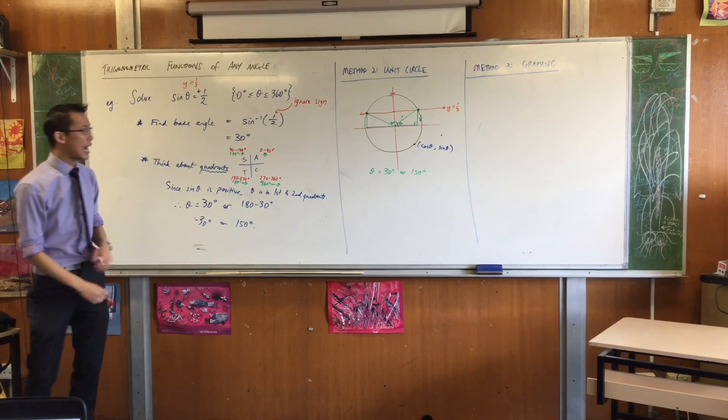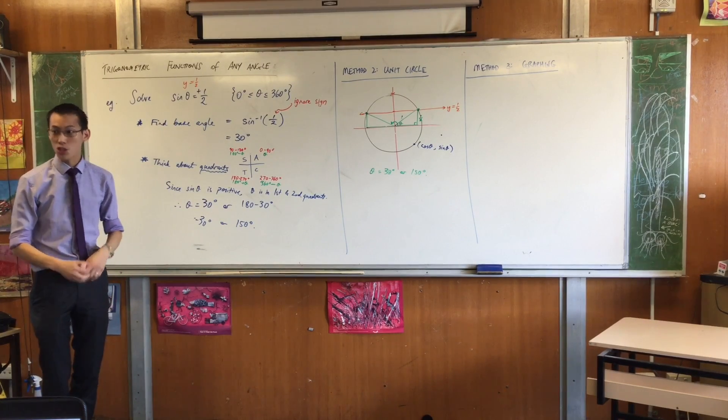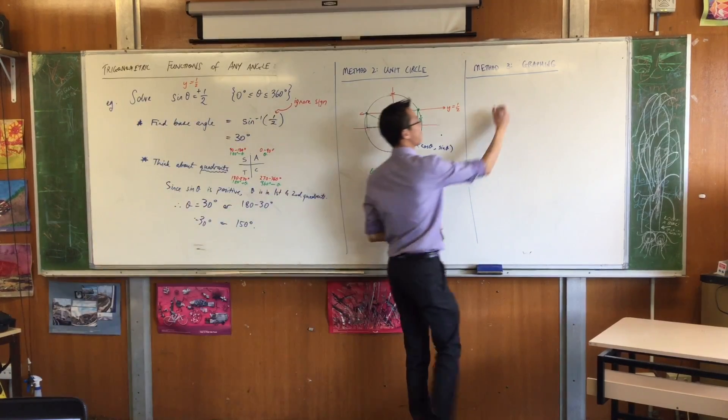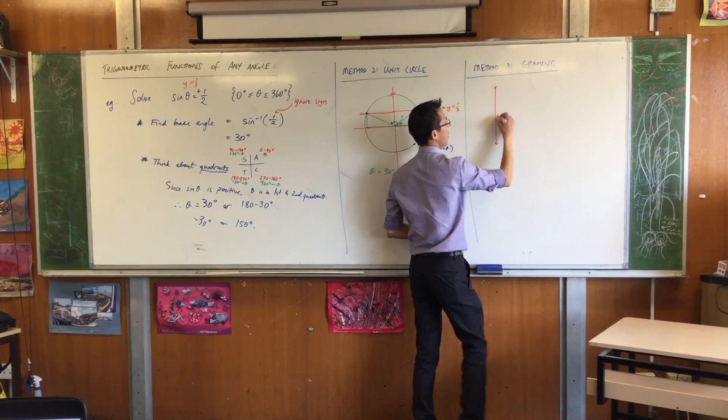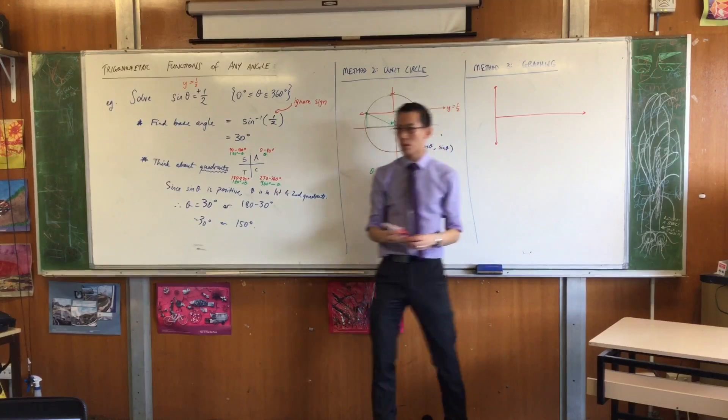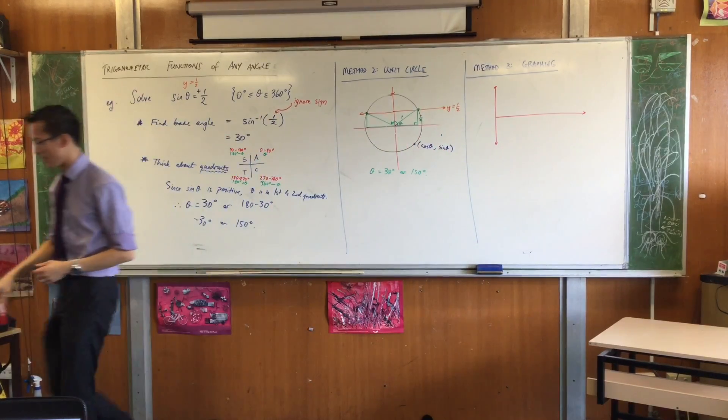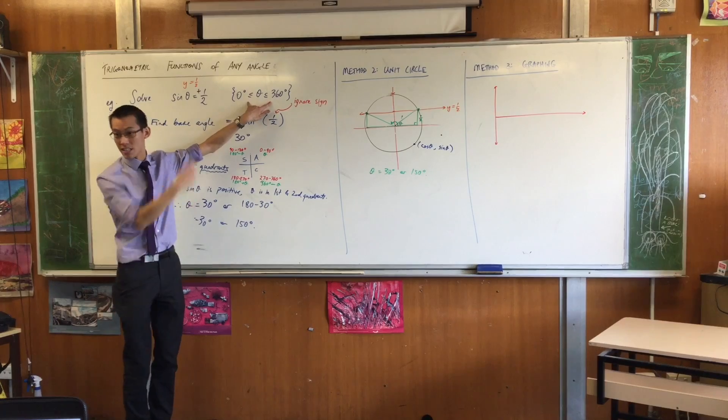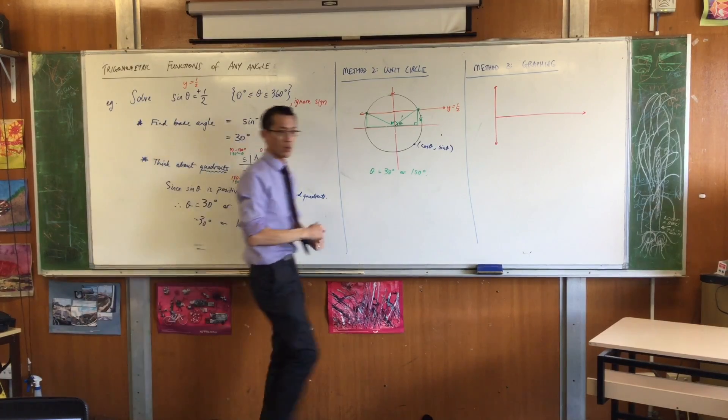So, at some point last year, you would have been introduced to what the sine graph looks like, and I want to show it to you again. I'm not going to draw the whole sine graph, which waves up and down forever. I'm just going to draw the part from 0 to 360 because that's the part we're interested in. So it looks like this.